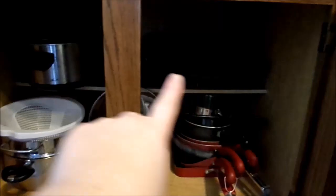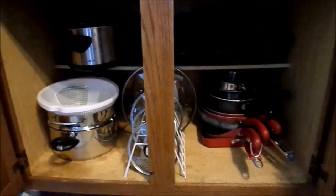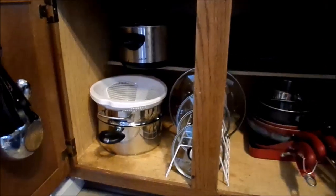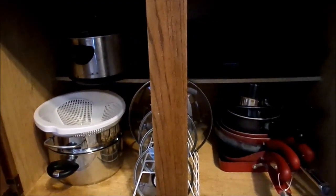On that top shelf we just keep smaller appliances: our crock pot, a griddle, and a George Foreman grill. And that does it for day five of the Happily Organized challenge.